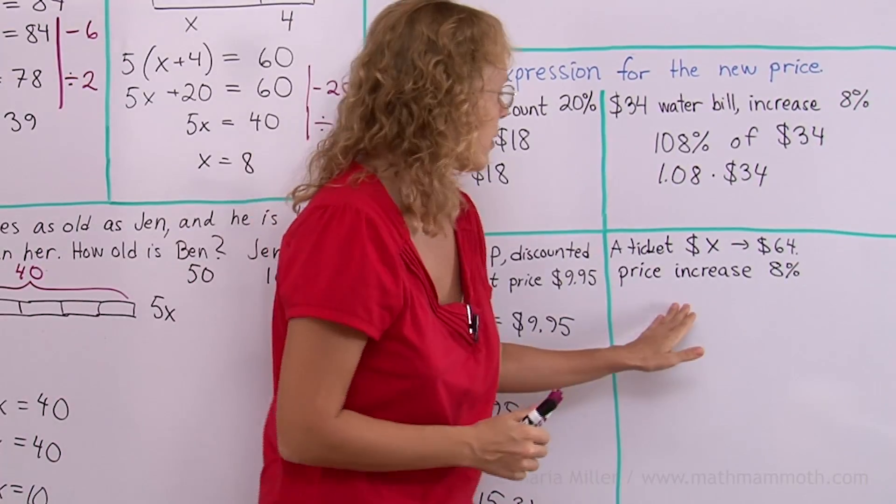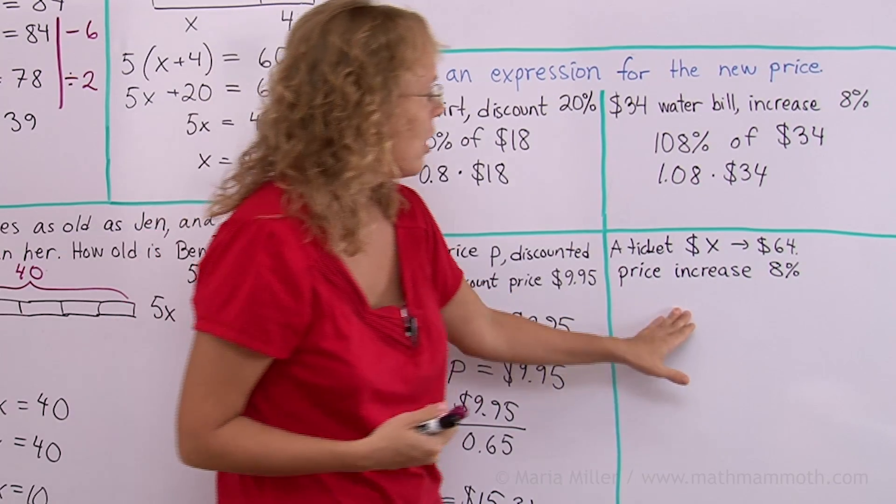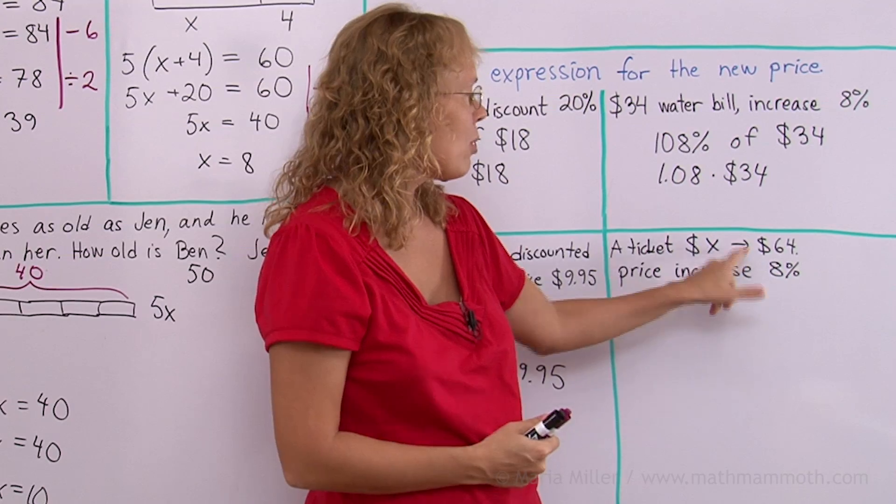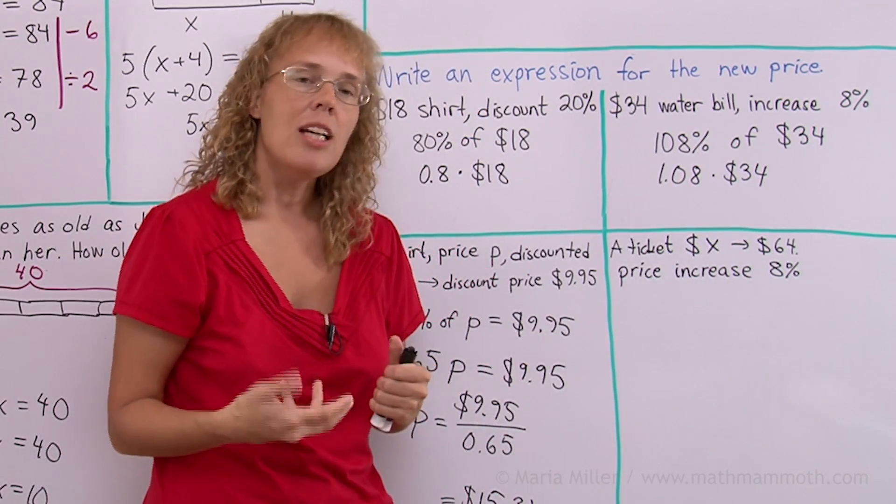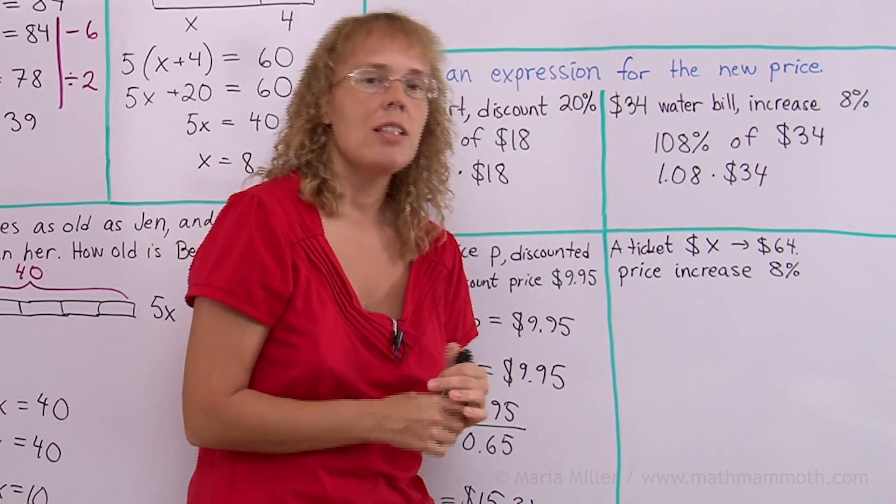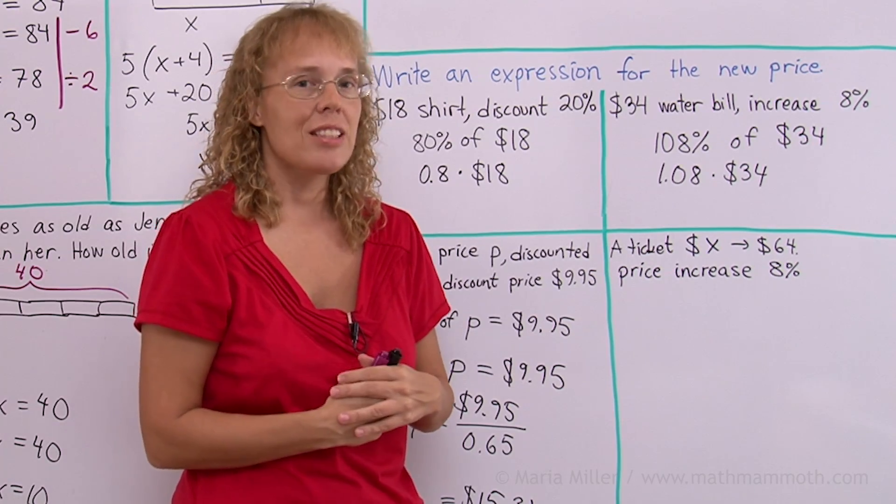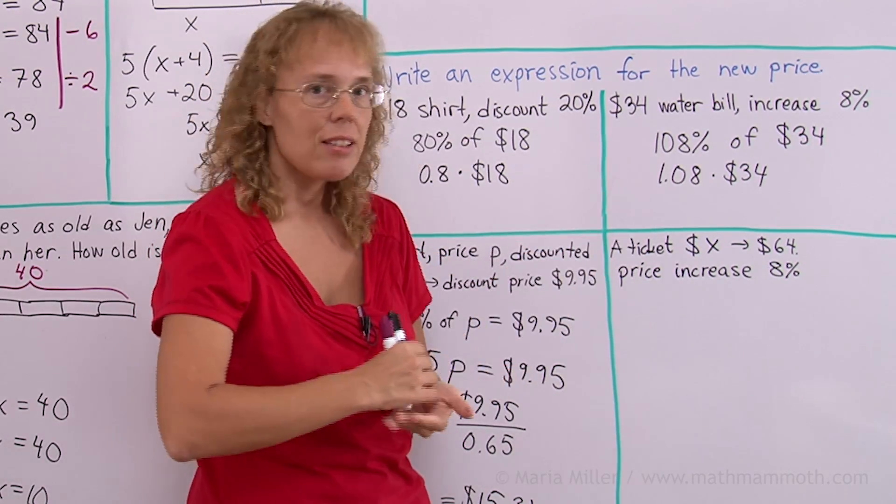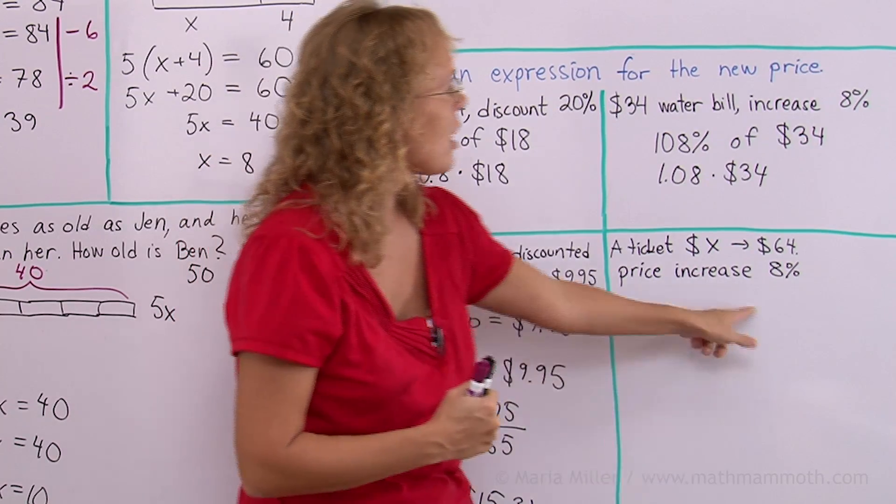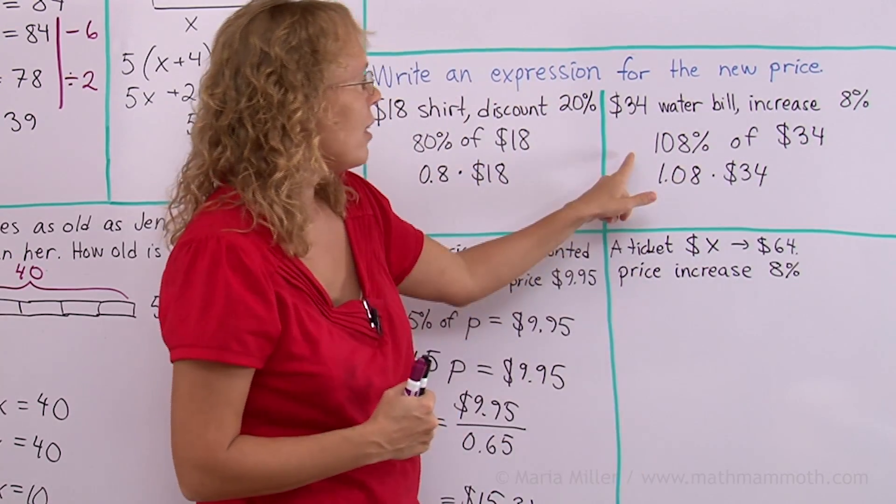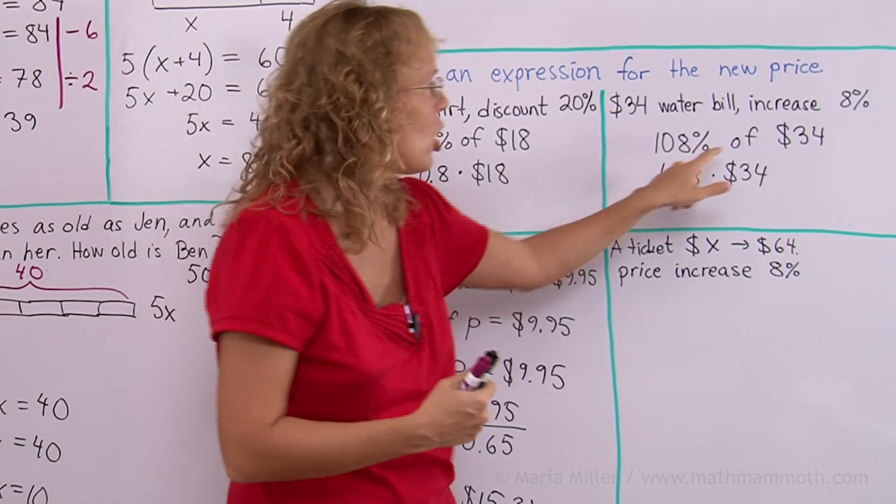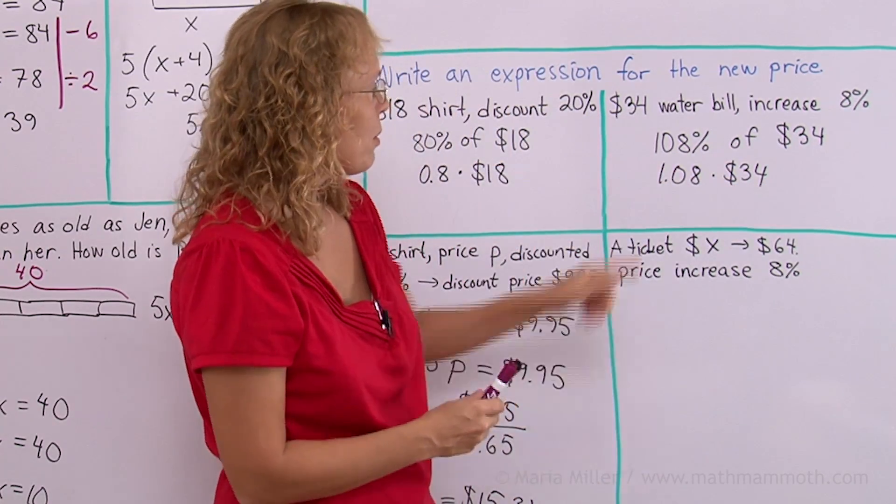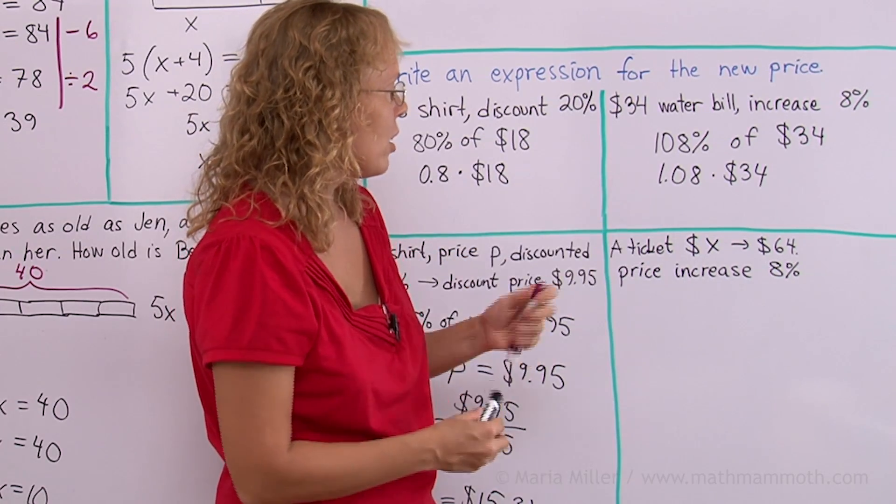A ticket costs X dollars. And then there was a price increase. 8% price increase. We know that. And we know the new price is $64. But what was the original price? The old price before the increase? Think just like here. When the price increases by some amount. Here's the same 8% even. Then you take 108% of the original price to get the new price.